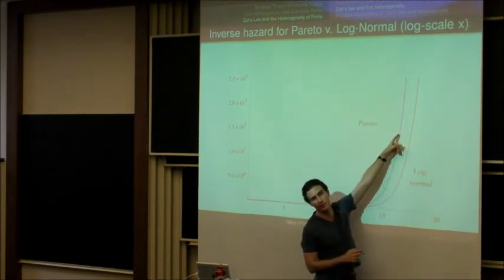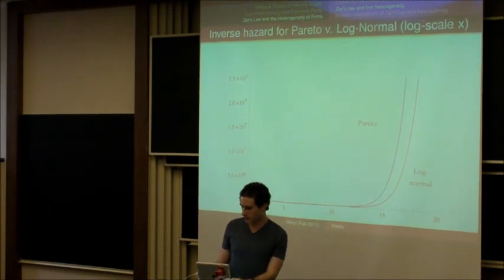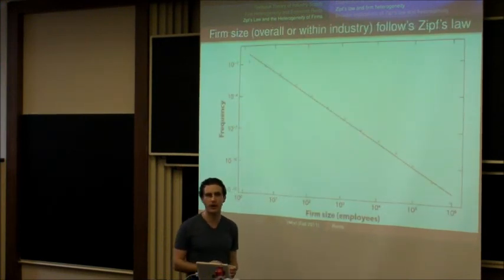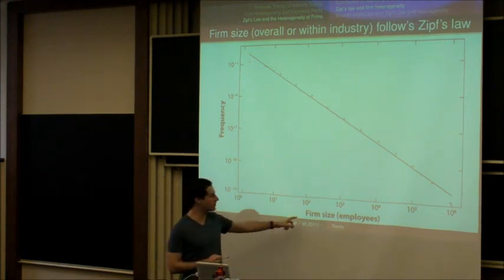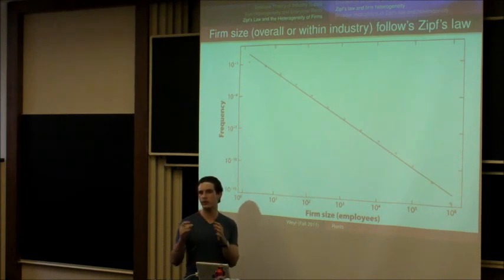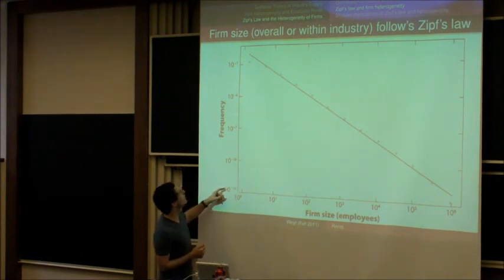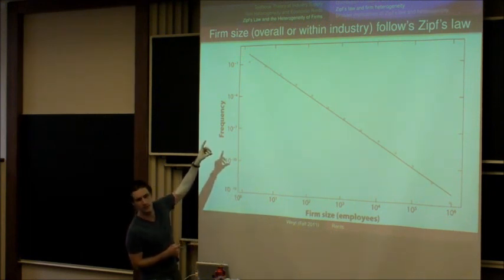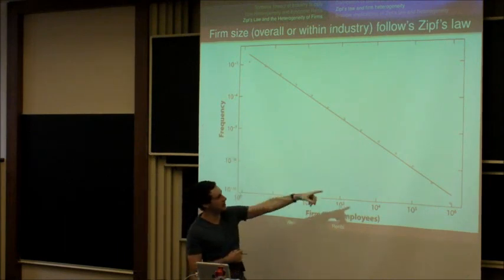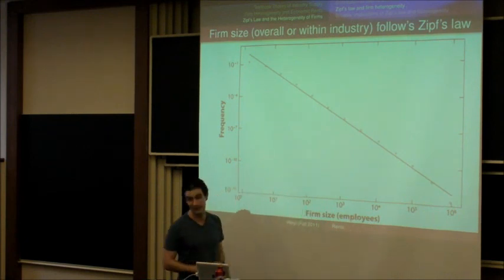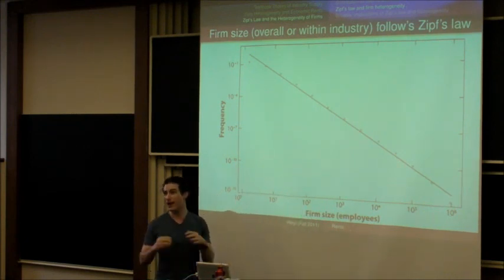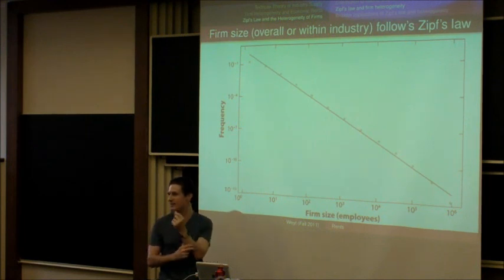Here's an example of Zipf's law. If you ask what is the log of the size of different companies, either within a given industry or across all industries in the United States, and what's the log of how many companies of that size there are, Zipf's law should say this is a downward sloping line with a coefficient of exactly one. That is exactly what you get—no matter how you cut it, you almost always get exactly Zipf's law, which is just amazing.